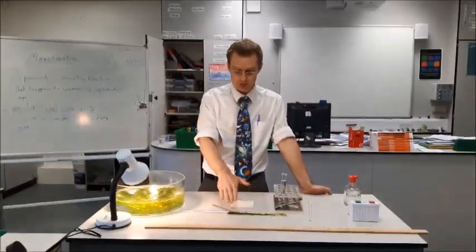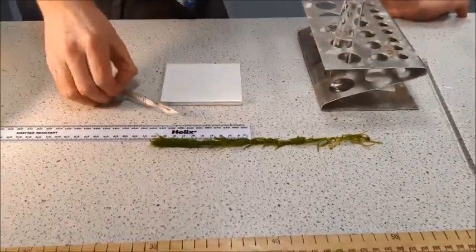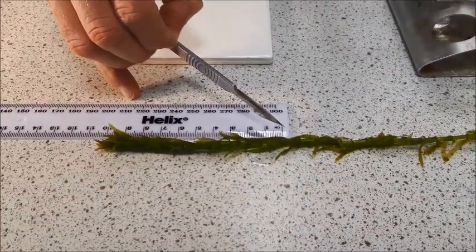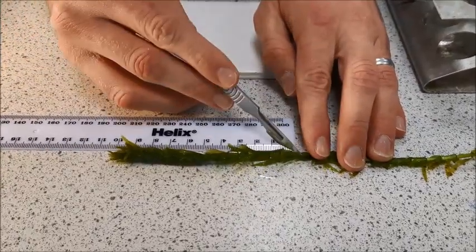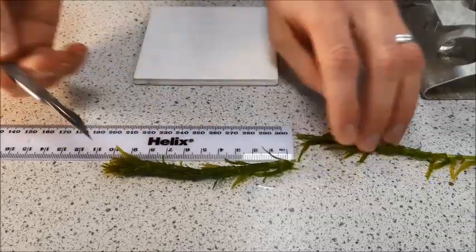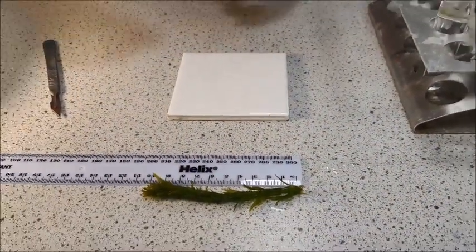So to begin with, the first thing I'm going to do is cut my plant to a 10cm length. Now I'm going to cut at a slight angle so that we've got a nice point on the end of our plant, and that will mean hopefully the bubbles will all come from that one sharp point and they'll be easier to count. Be very careful with the scalpels, obviously they're very sharp and we don't want any accidents.